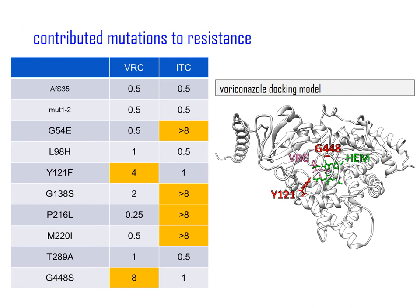We analyzed more mutations found in other isolates using the same method, then confirmed some mutations seemed responsible for specific azole antifungals. For example, looking at a voriconazole docking model and confirmed mutations, two mutations were identified: tyrosine-121 to phenylalanine and glycine-448 to serine. Most of these mutations locate on the gate of entry of voriconazole to the CYP51A molecule. Similar findings were found for itraconazole mutations. Hopefully we will be able to predict resistant isolates correctly.